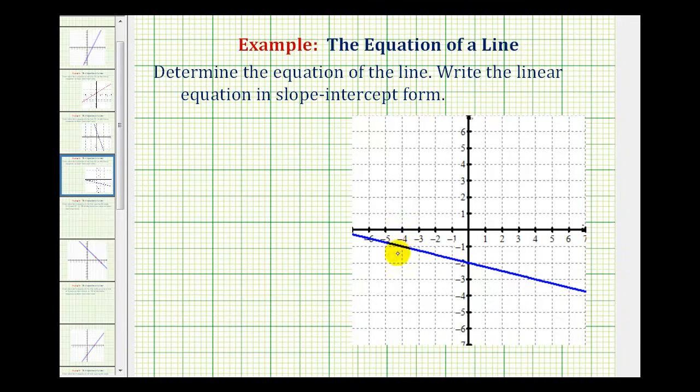We want to determine the equation of the line here in blue. We want the equation to be in slope-intercept form, which is the form y equals mx plus b.